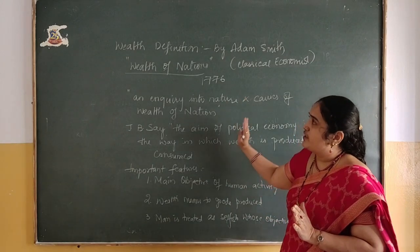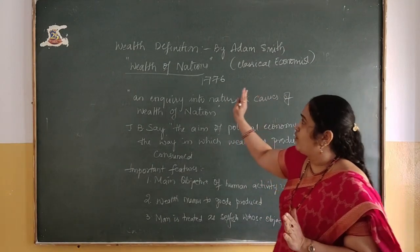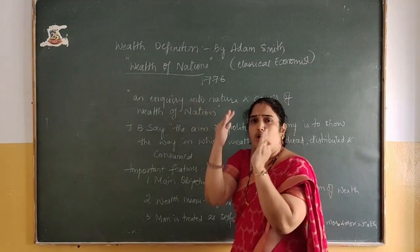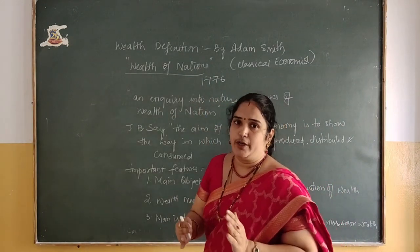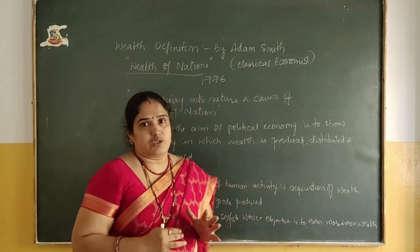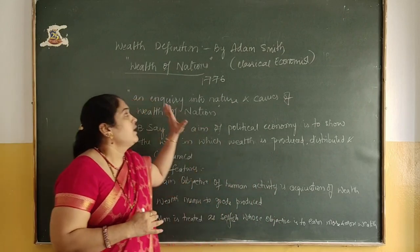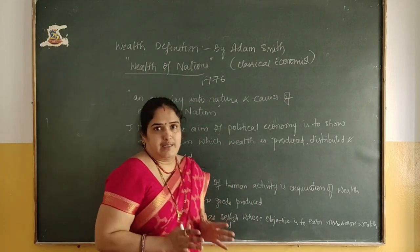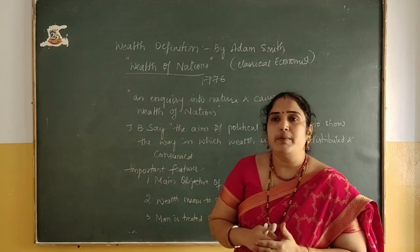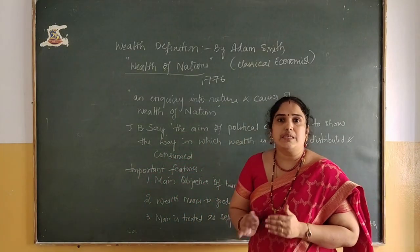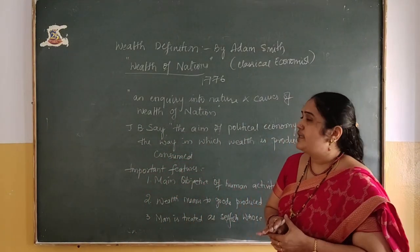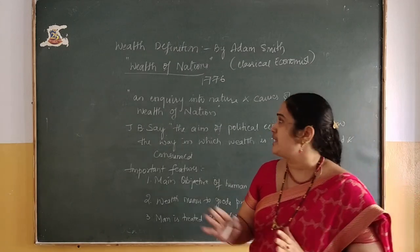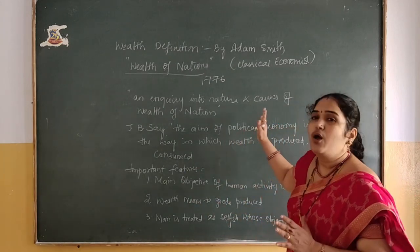In Adam Smith's wealth definition, he is saying that all goods we are producing are tangible goods — goods that can be seen and felt. Intangible means which cannot be seen or felt. These goods which are produced and can be measured in quantitative terms are regarded as wealth.